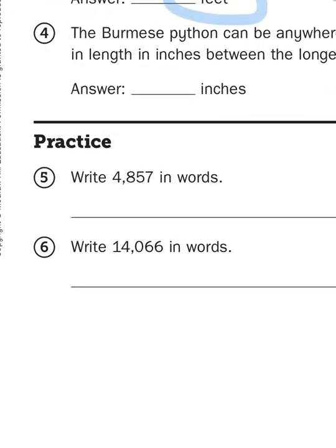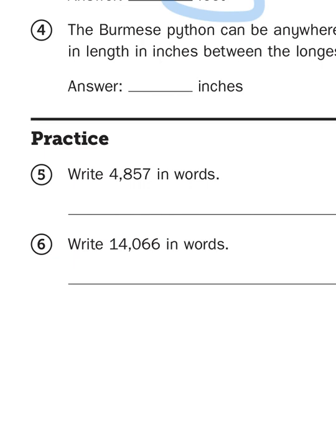Finally, down at the bottom where it says practice, it says write 4,857 in words. So when you write a number in word form, you are literally just writing down the words you would say when you say that number out loud. So when I say 4,857, that is exactly what I'm going to write down.